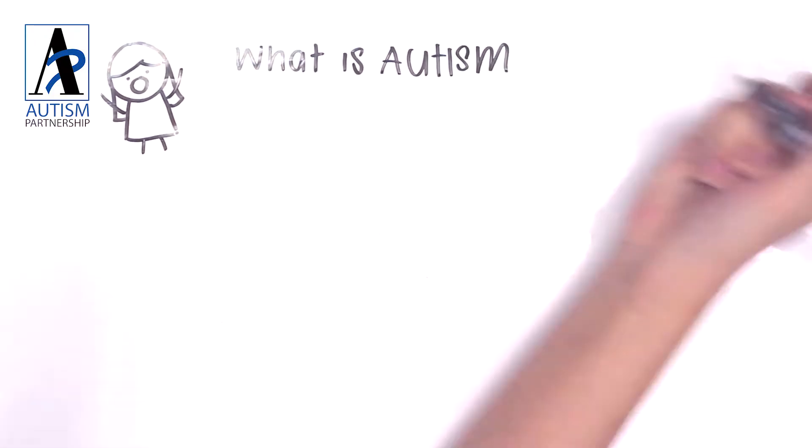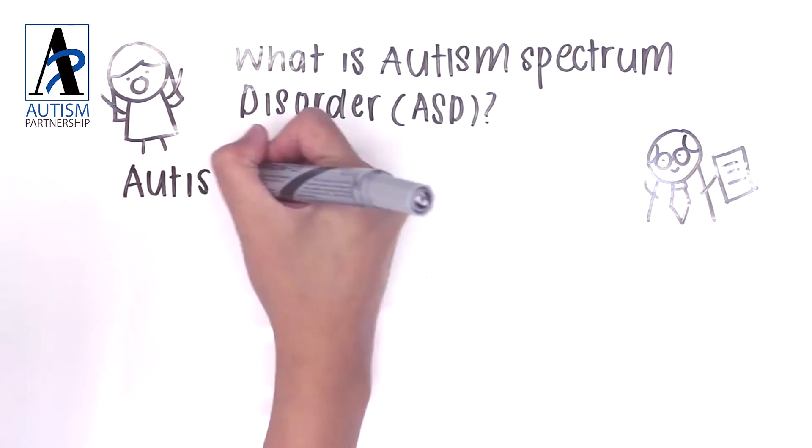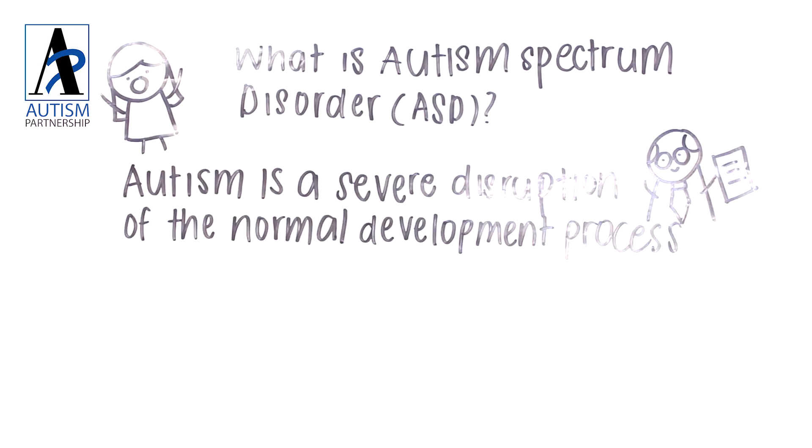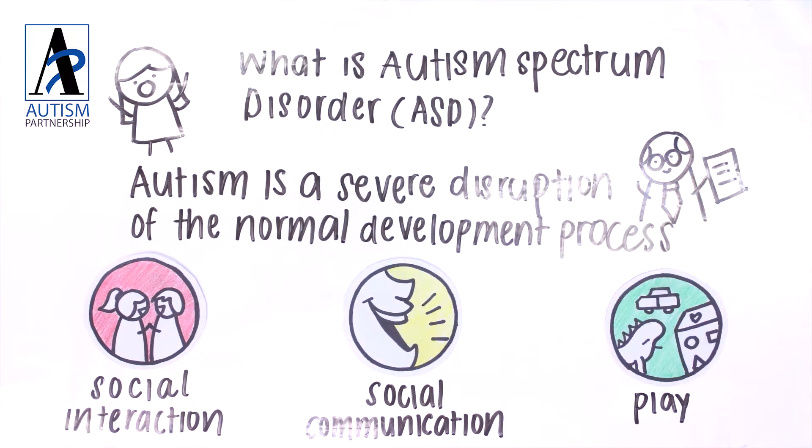First things first, what is Autism Spectrum Disorder or ASD? Autism is a severe disruption of the normal development process and is often diagnosed within the first few years of a child's life. It can manifest in impaired social interaction, social communication, and play.